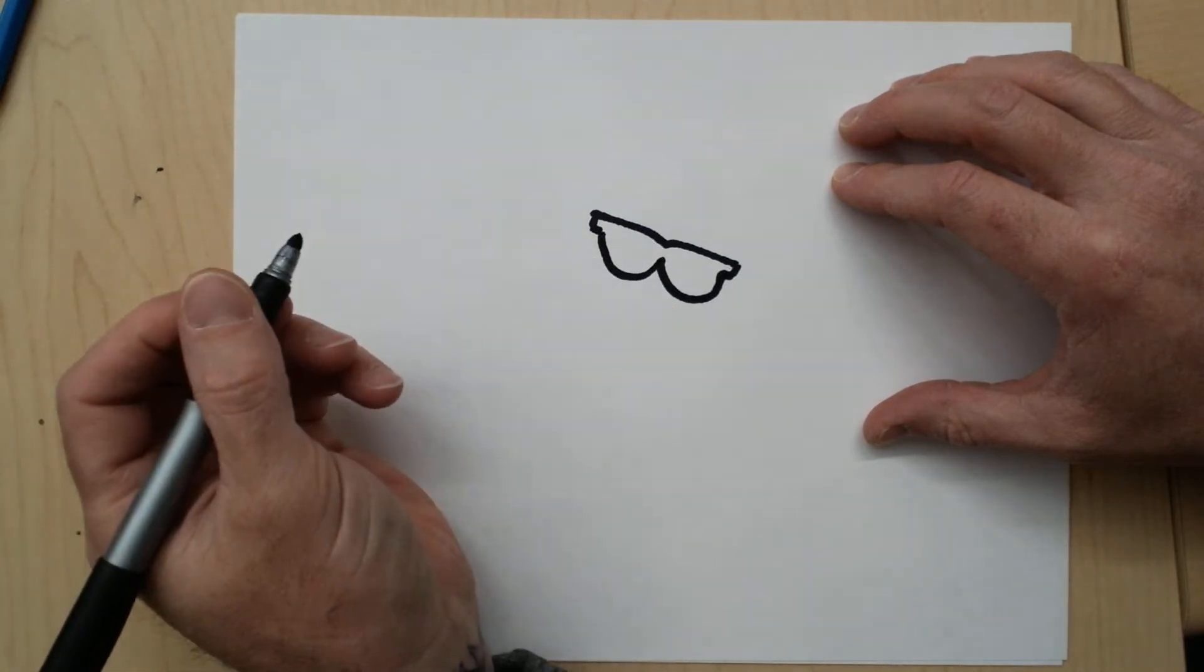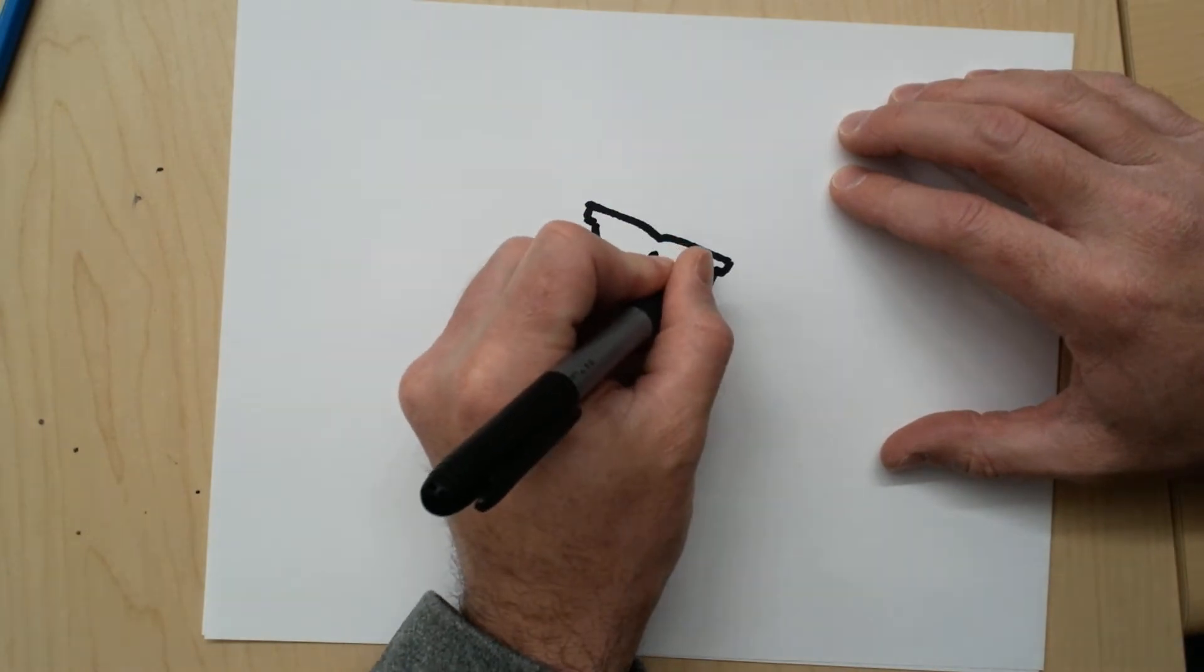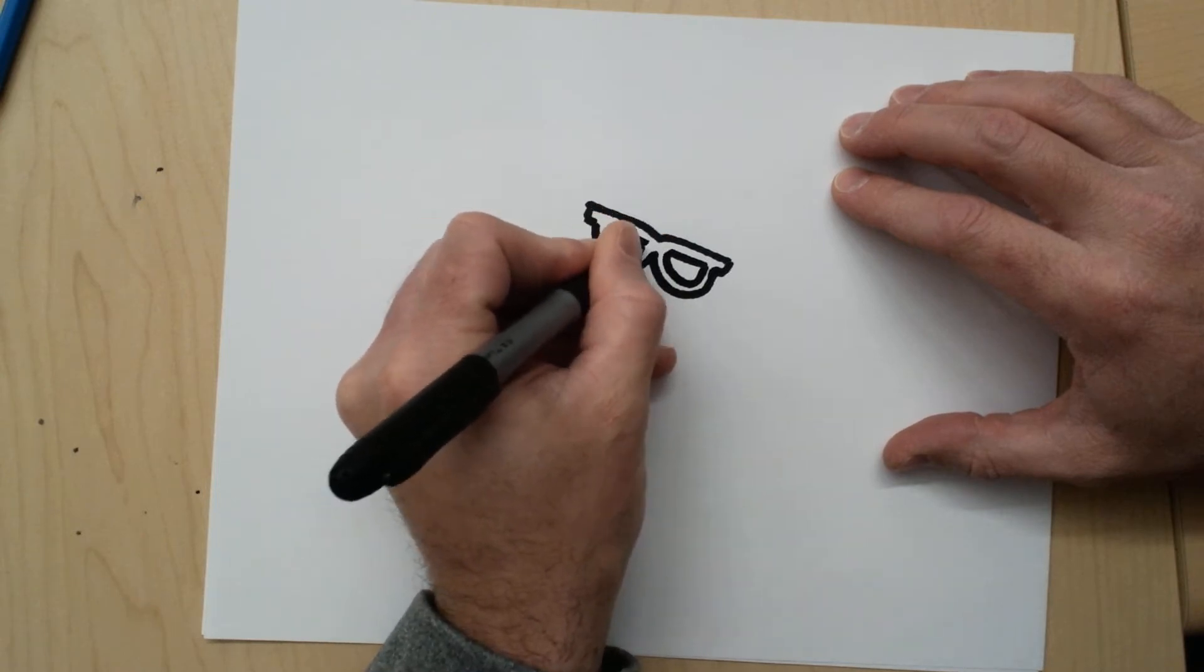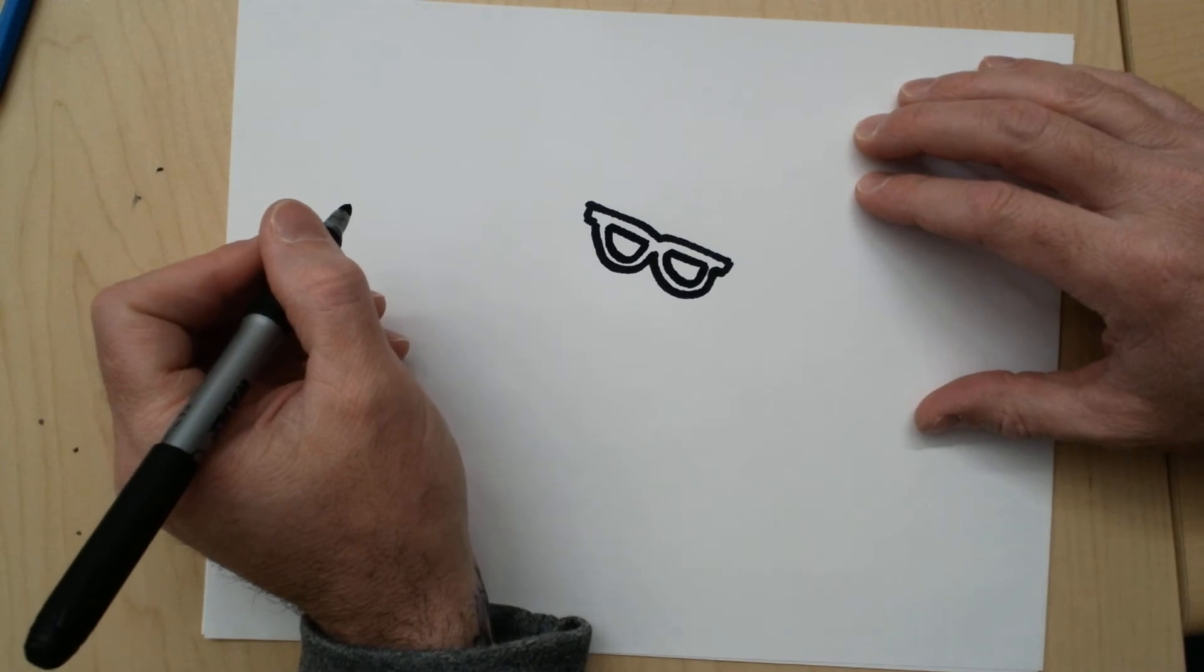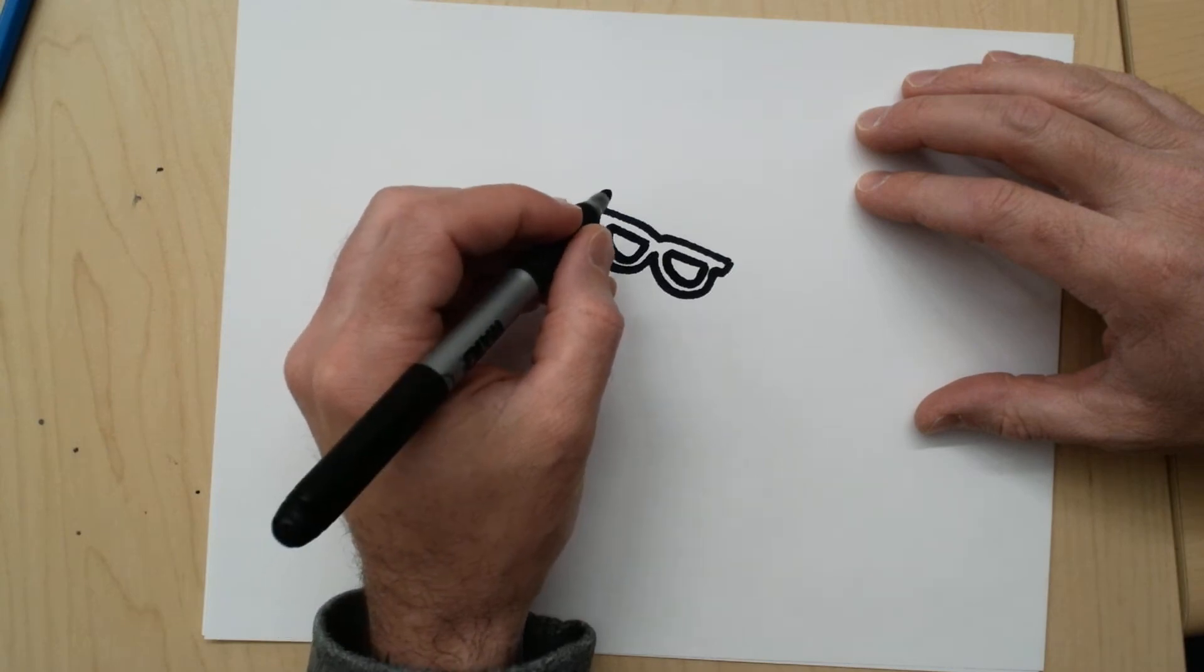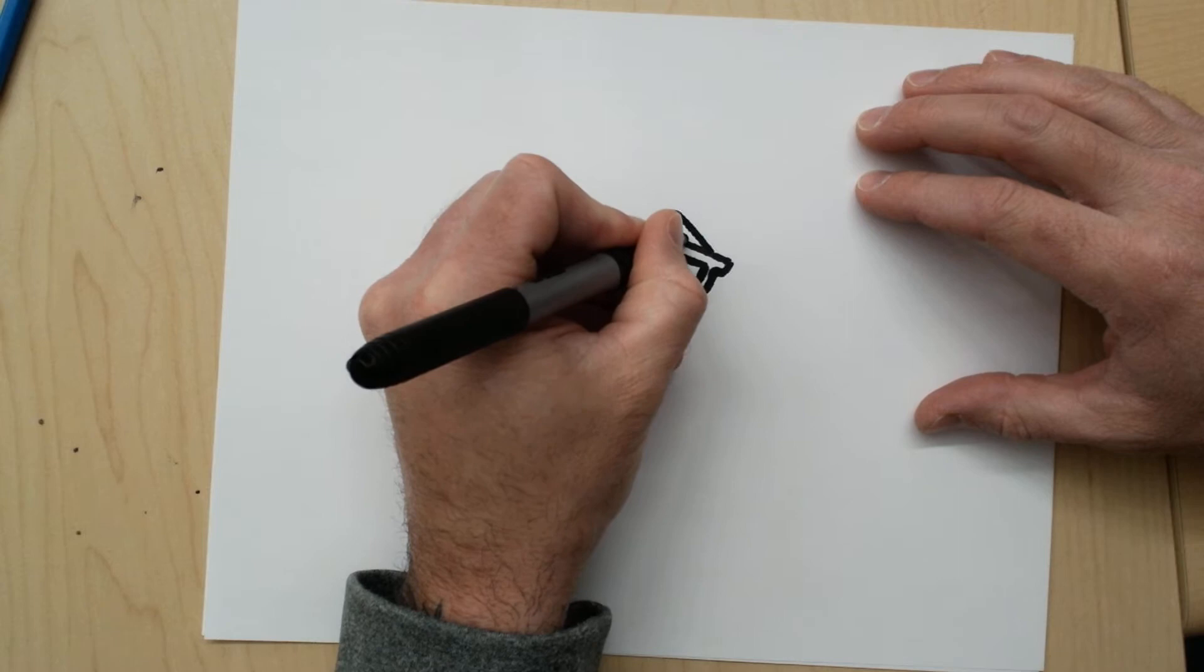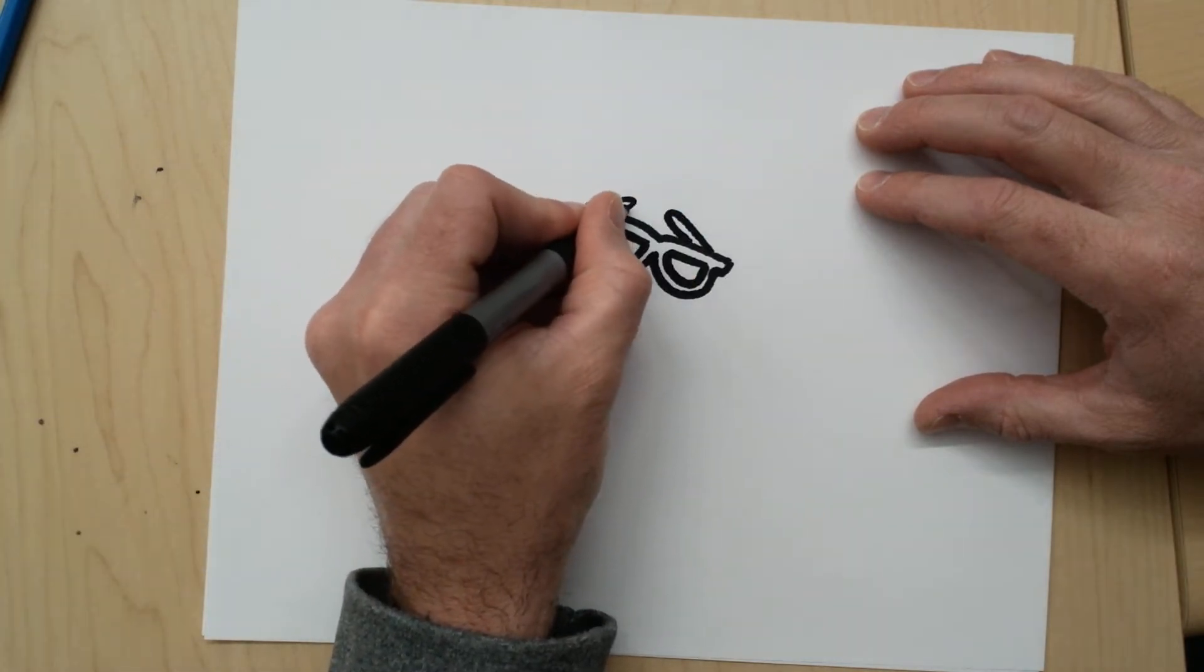And on the inside we're just going to pretty much copy that shape like this. There you go. Alright we'll come back to his eyes a little bit later. Now the next thing I'm going to do is right above these glasses he has some little eyebrows and it's basically just like two little oval shapes like that.